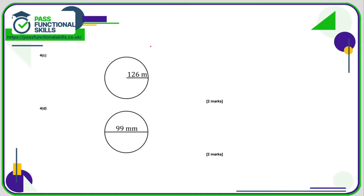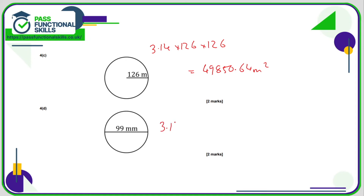C is 3.14 times 126 times 126, which comes to 49,850.64 square metres. For D, the diameter is 99, so the radius is 49.5. So 3.14 times 49.5 times 49.5 comes to 7,693.785 square millimetres.